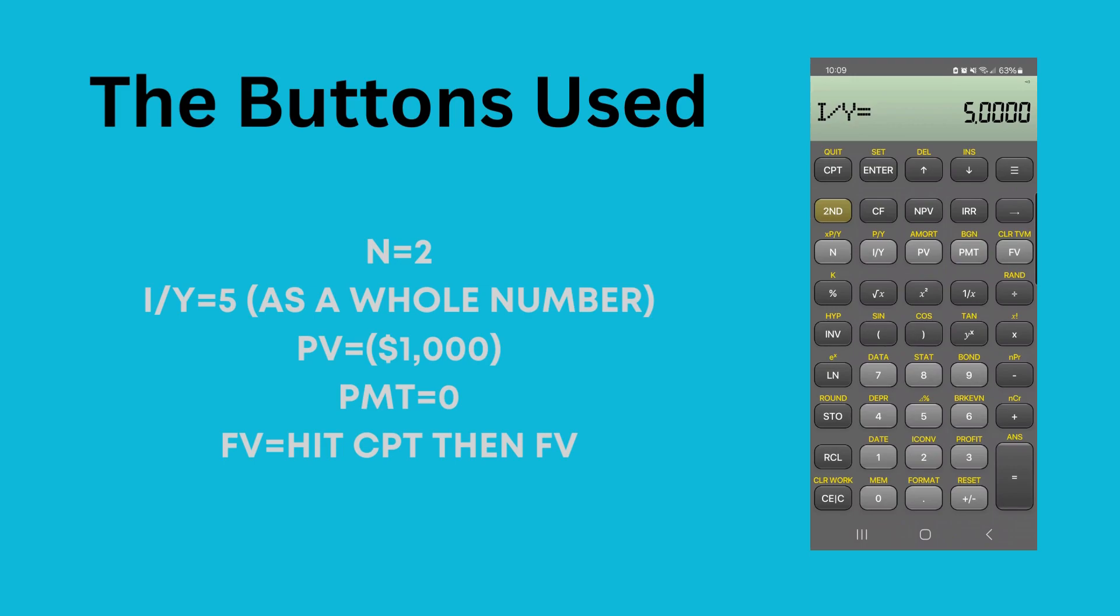Our present value is how much this investment is worth right now. We just put $1,000 into a CD, so it's worth $1,000. One thing that's important to note: you have to make this a negative by hitting the plus minus sign on the very bottom right-hand corner of the calculator. The reason you have to do this is because if you don't, you'll get an error message with the TI.